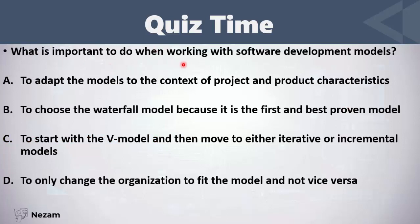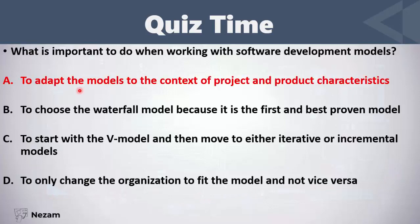What is important to do when working with software development models? To adapt the models to the context of the project and product characteristics. To choose the waterfall model because it is the first and best proven model. To start with the V model and then move to either iterative or incremental models. To only change the organization to fit the model and not vice versa. Of course, the correct answer is that we adapt the models to the context of our project.